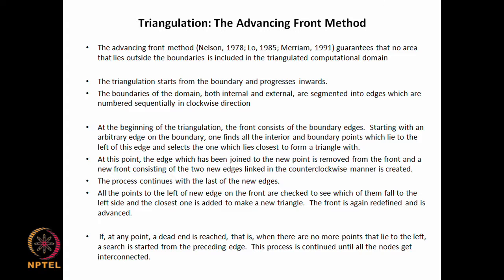You start with one boundary point and move along the boundary segments you have already identified along the nodes, putting them in sequential order while going in the clockwise direction. For all internal domains, we go in the anticlockwise direction. At the beginning of the triangulation, the front consists of boundary edges. Starting with an arbitrary edge on the boundary, one finds all interior and boundary points lying to the left of this edge and selects the one which lies closest to form a triangle with.